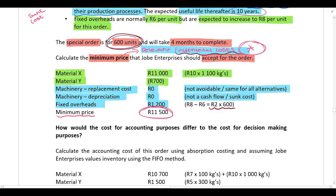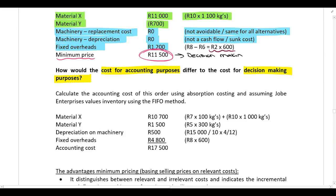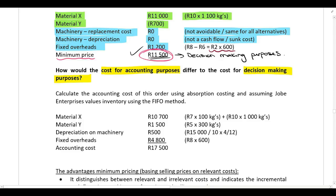Taking all information into account, I can calculate the minimum price. The minimum price is always based on only relevant or incremental costs. If the customer offers 12,000 Rand I'll accept because it's more than the minimum price; if they only offer 10,000 Rand I should not accept because it won't cover my relevant costs.